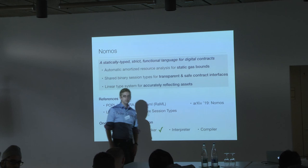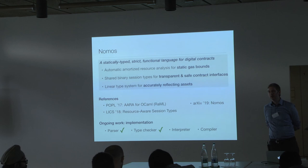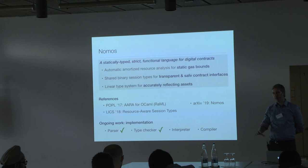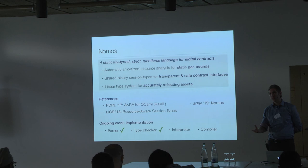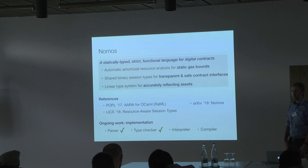Q&A: How does Nomos compare to Obsidian (another CMU project)? Obsidian is more like trying to improve on Solidity by adding features to it. Some ideas are similar, like linear types — many people designing programming languages for smart contracts add linear types. But Obsidian is quite different from Nomos; it's more like Solidity plus additional features, whereas Nomos is a clean-slate design.